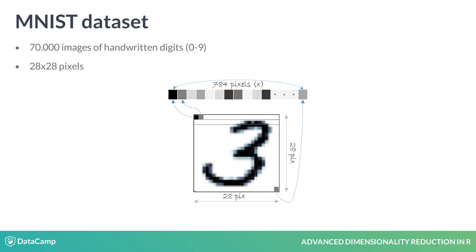Every pixel has a single value associated with it, indicating its lightness or darkness, which is an integer between 0 and 255. In this image, you can see an example of the number 3. Let's look at some more digit samples.